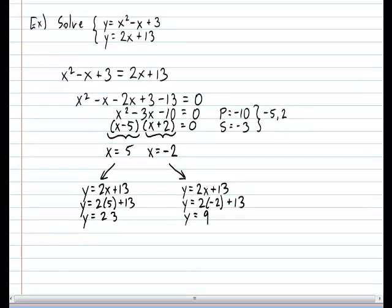That means the line will intersect the parabola at the following two coordinates. Our solution. The line will intersect the parabola at the coordinate 5 and 23 and at the coordinate minus 2 and 9.